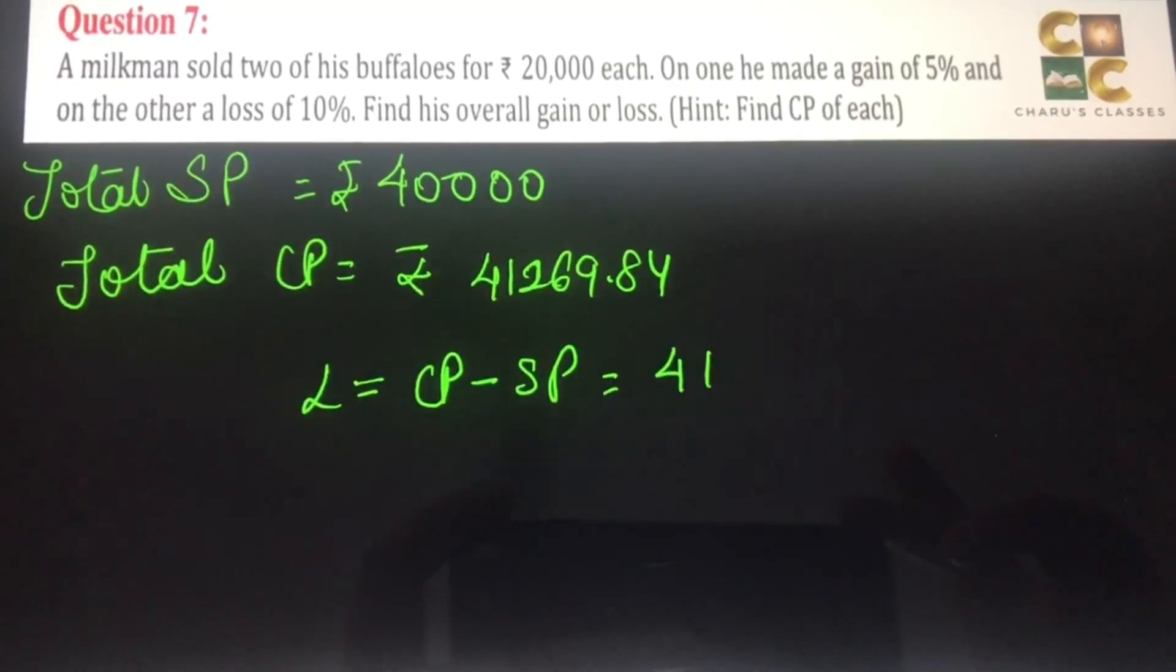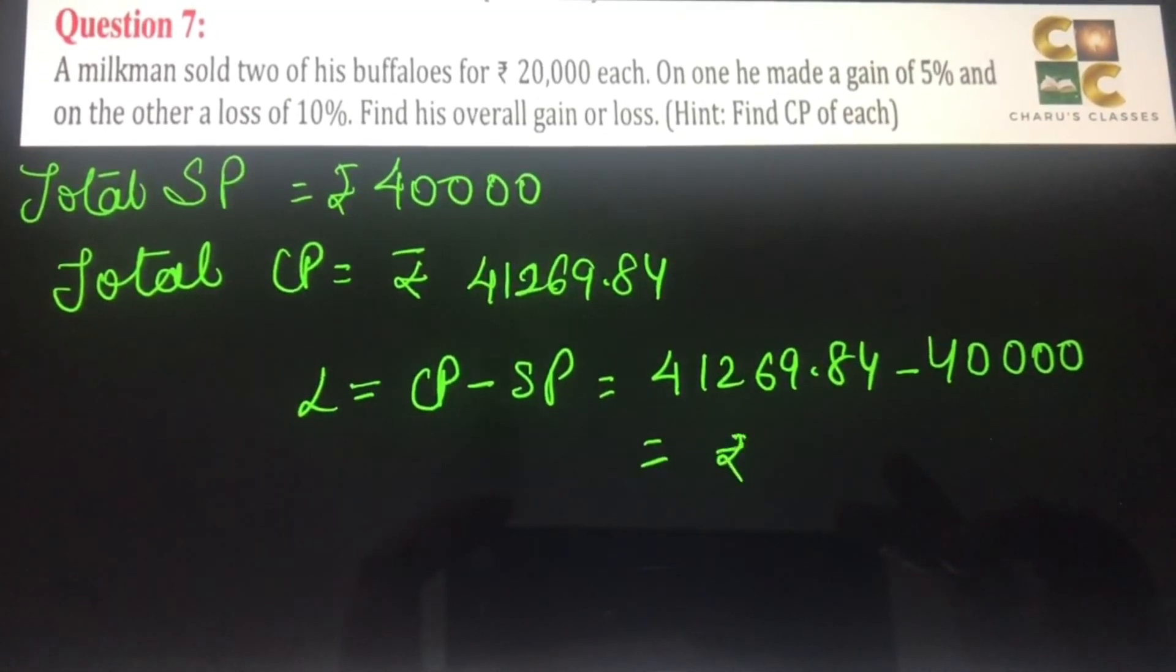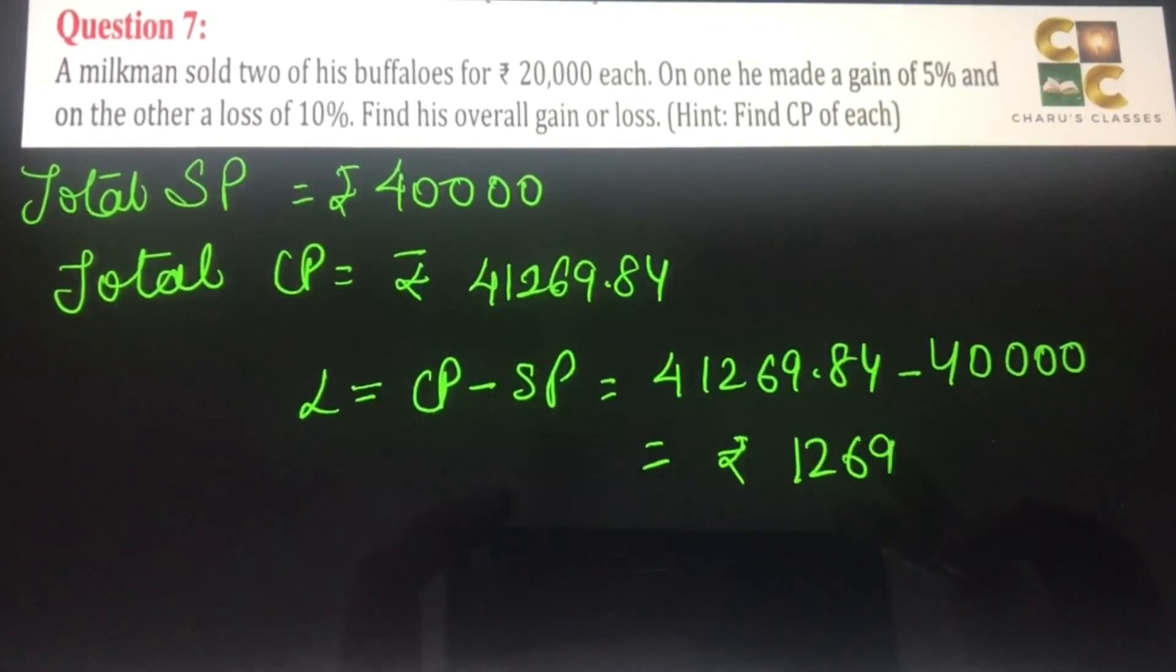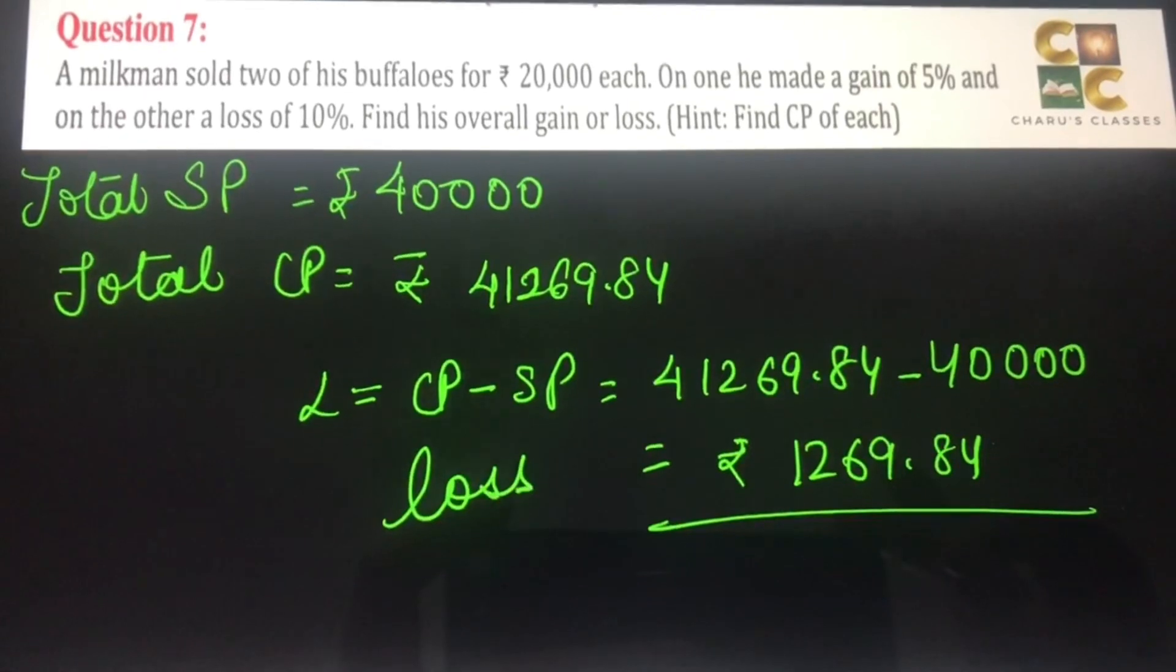Loss equals CP minus SP, that is rupees 41,269.84 minus rupees 40,000. So that is rupees 1,269.84. This is the total loss.